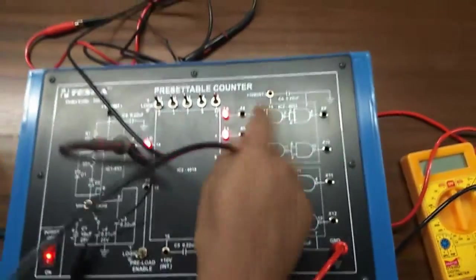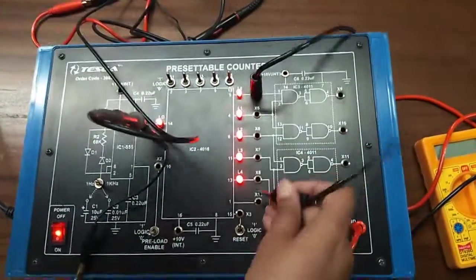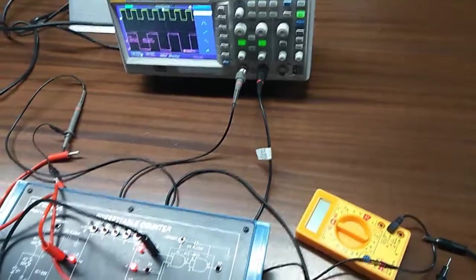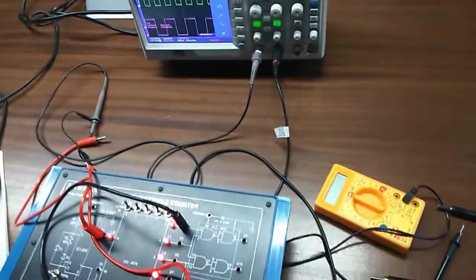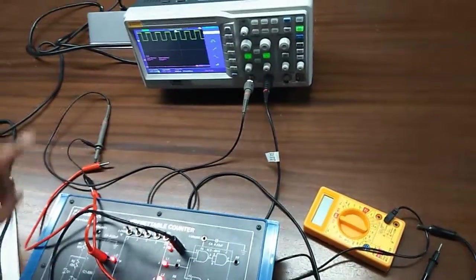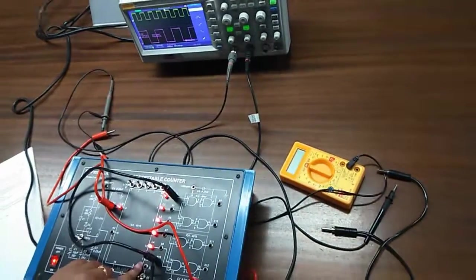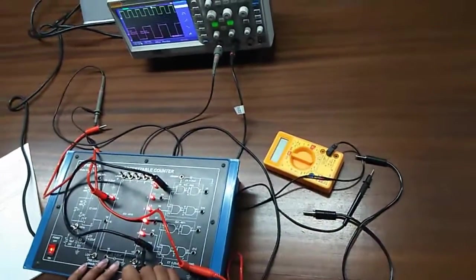Now short X4 to X13 and see the output waveform of X13 at the second channel of CRO.